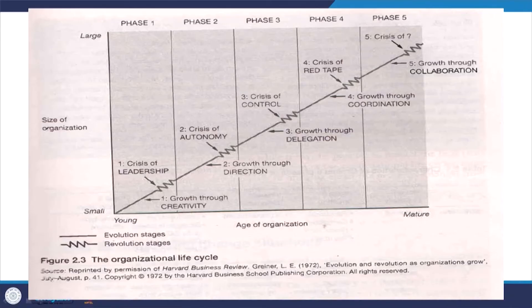There are various problems that an organization encounters in each stage: crisis of leadership, crisis of creativity, crisis due to autonomy, and when power is delegated there is no clear direction being provided. Then there is the problem of coordination and collaboration, which will lead to different phases of crisis that the organization needs to take care of.